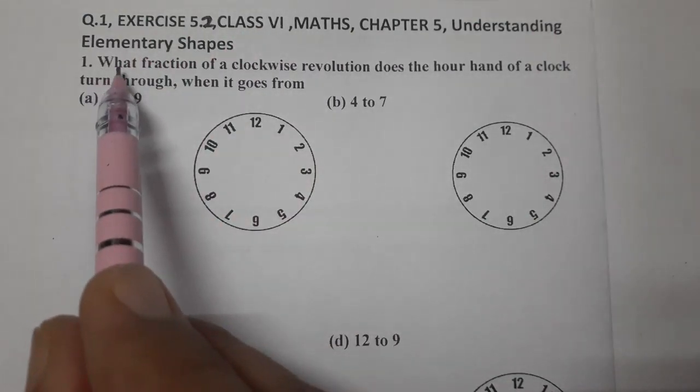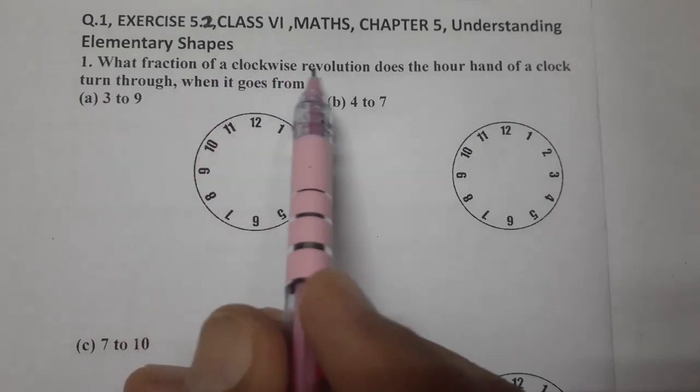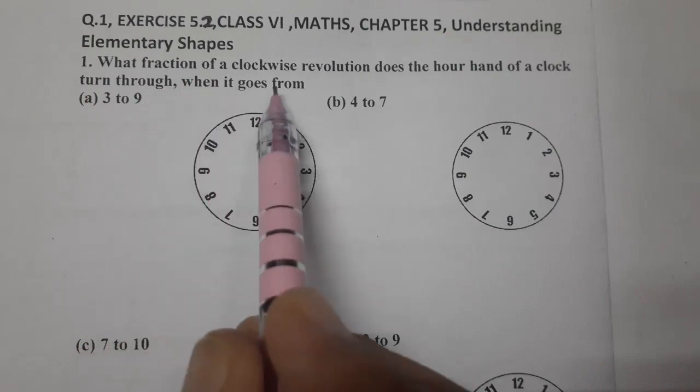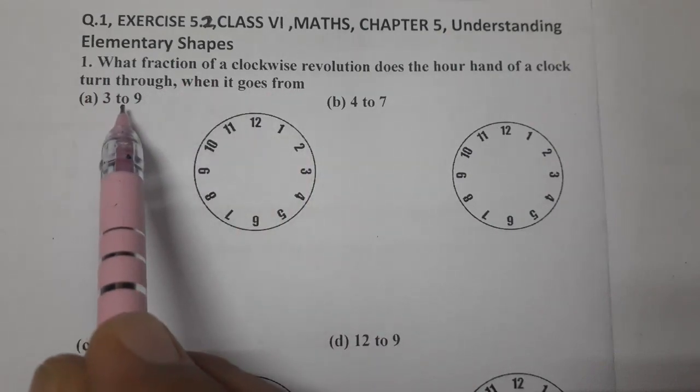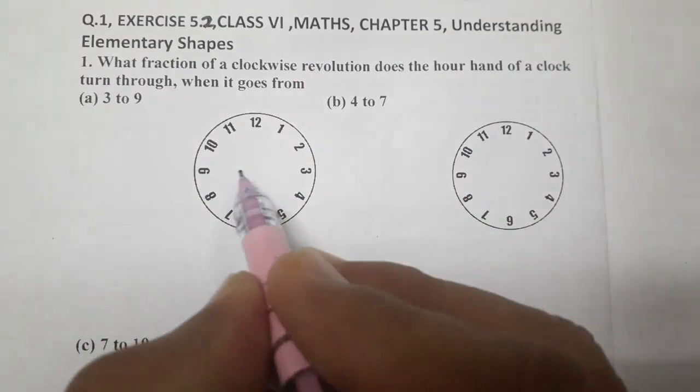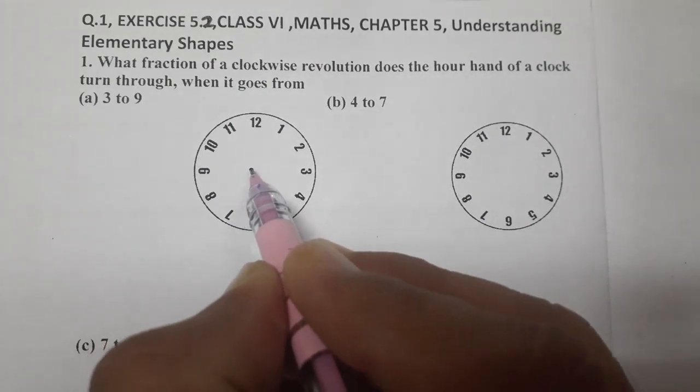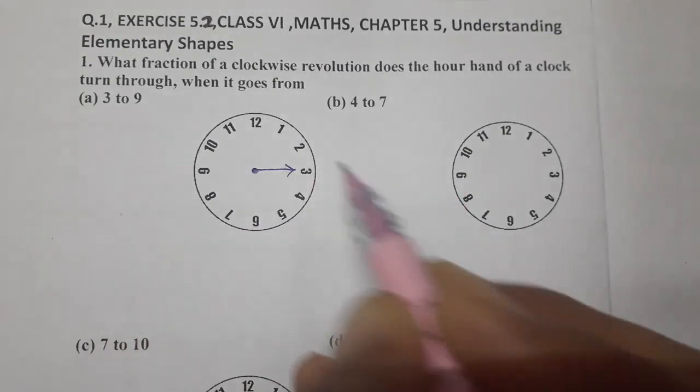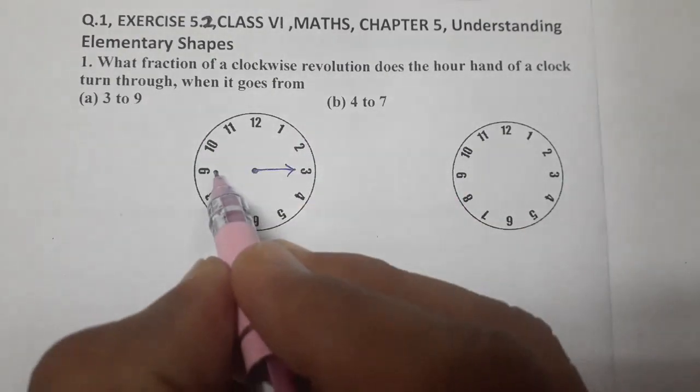First question, what fraction of a clockwise revolution does the hour hand of a clock turn through when it goes from 3 to 9? So, what part of a fraction revolution we need to find out? 3, we are at 3. And we have to move towards 9, where is 9? Here 9.